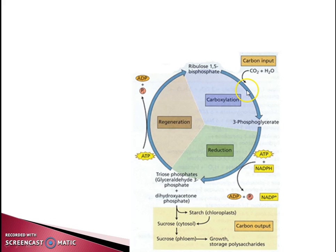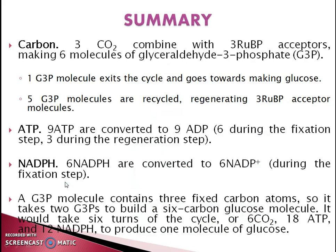When 3 molecules of carbon dioxide enter the Calvin cycle, about 6 G3P molecules are produced. One triose phosphate is exported for the production of sucrose and starch; the remaining 5 are recycled to regenerate RuBP, the carbon dioxide acceptor molecule, to begin the cycle again. In summary: 3 molecules of CO2 combine with 3 molecules of ribulose bisphosphate, making 6 molecules of G3P (glyceraldehyde 3-phosphate or triose phosphate). One G3P exits the cycle toward glucose, and the remaining 5 G3P molecules are recycled to regenerate 3 RuBP acceptor molecules.